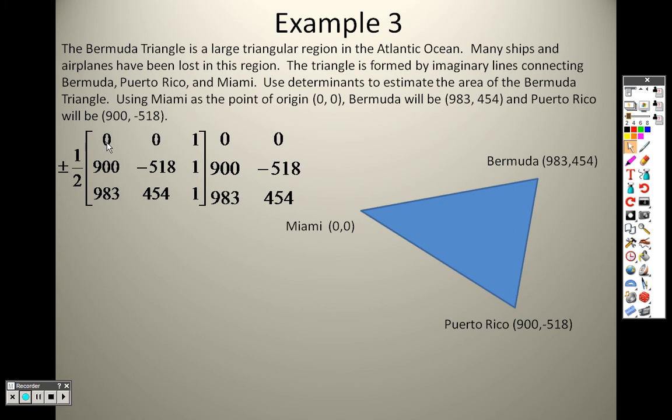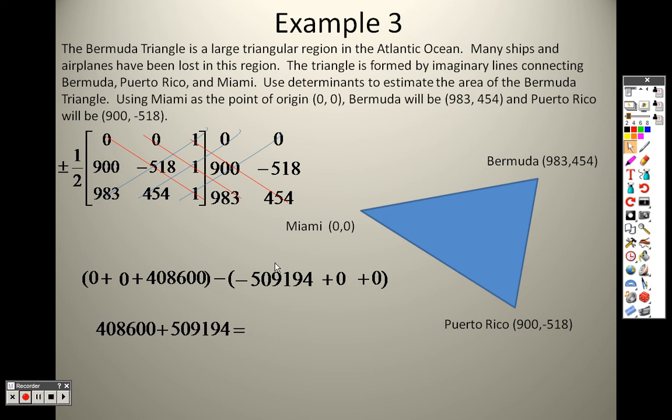This is actually much easier than you think. Down, when I multiply that, 0 times all that is just 0. The second one, 0 times all that is just 0. The last one is really just 1 times 900 times 454. Minus whatever is up: 983 times negative 518 times 1 is negative 509,194. When you go up, that gives you 0 and that gives you 0. So what we have is that minus a negative, which is like saying plus. When you add them together, you get 917,794.